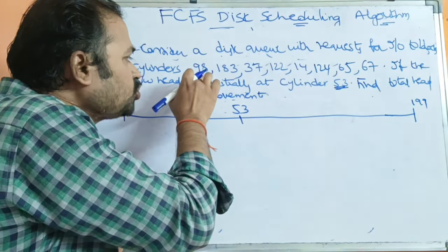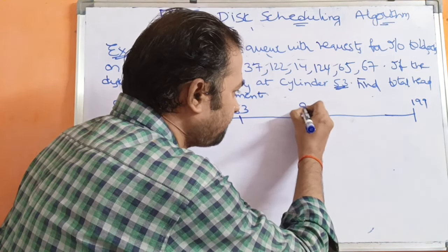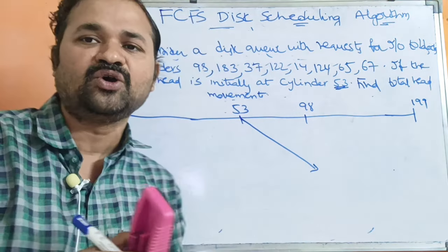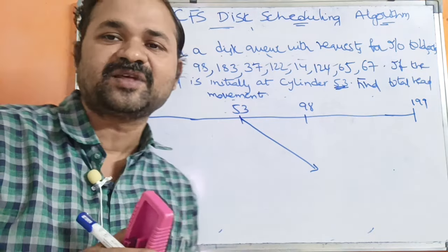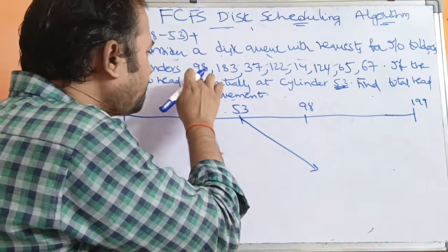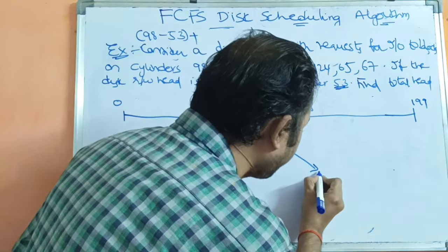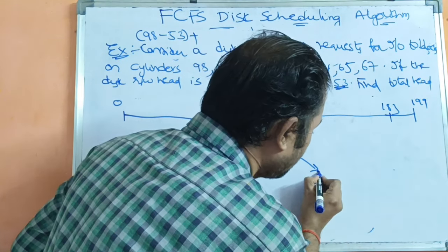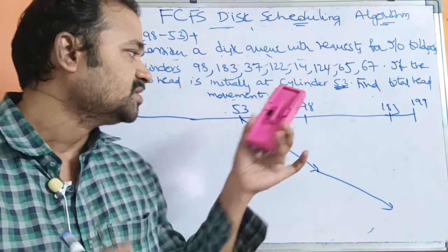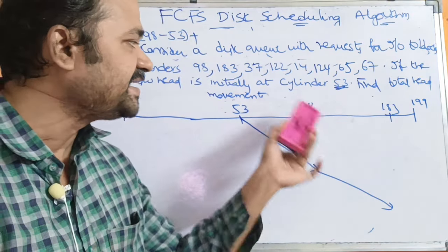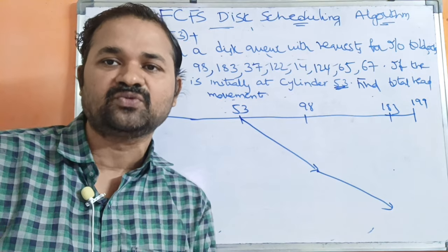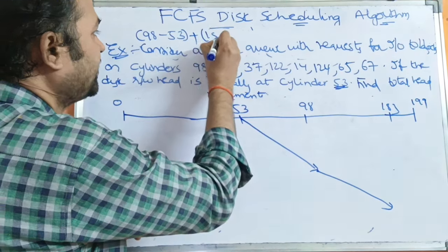From cylinder 53, we first move to cylinder 98. So the head movement is 98 minus 53. Next, after 98 we have to access cylinder 183. From 98 to 183, the bigger value is 183, so we subtract 98 from 183: that is 183 minus 98. We must always subtract the minimum value from the maximum value to get a positive result.